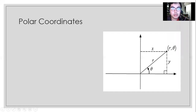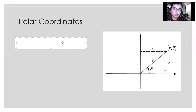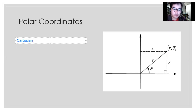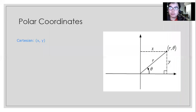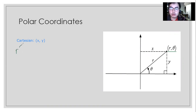Let me recall what the Cartesian Coordinates are. Cartesian consists of X and Y as the pair of coordinates. In order to change into Polar, let me discuss what the Polar Coordinates are. In order to change from Cartesian to Polar, we're going to use the Pythagorean theorem on the coordinates of the Cartesian plane.